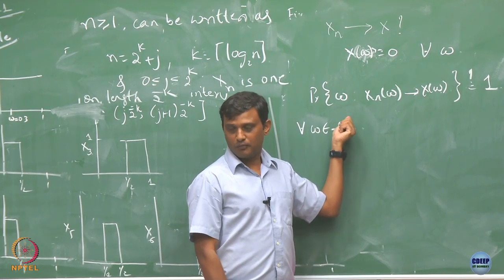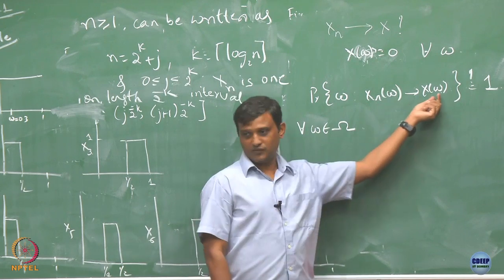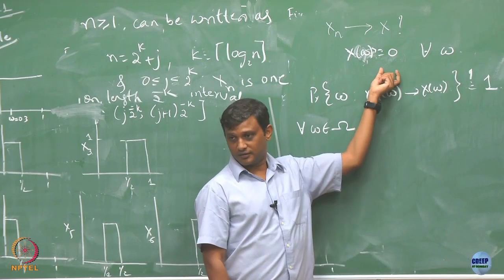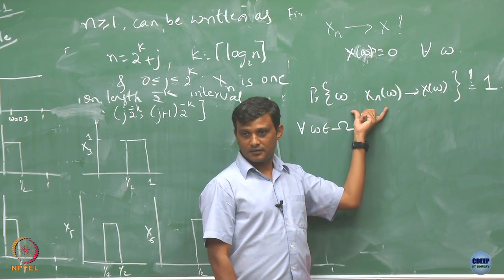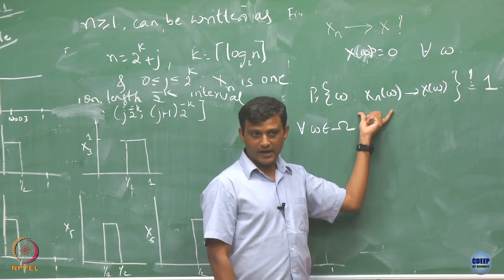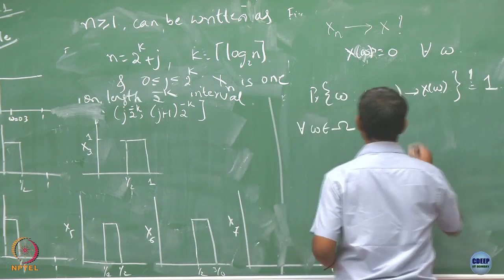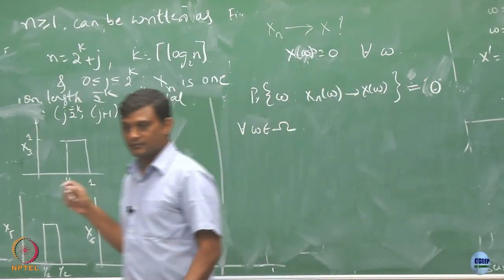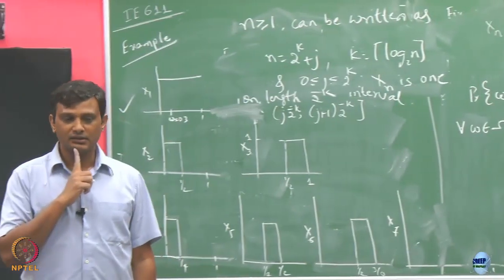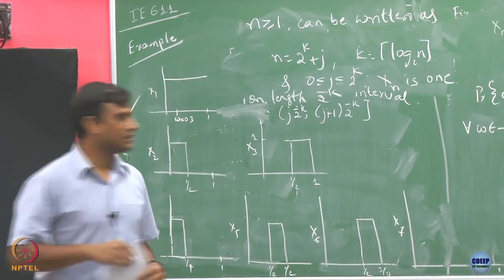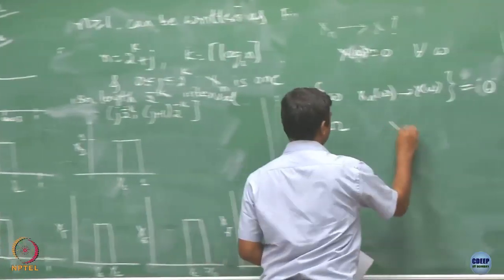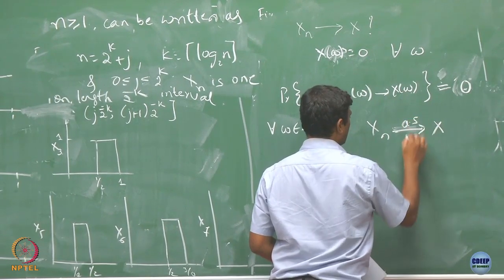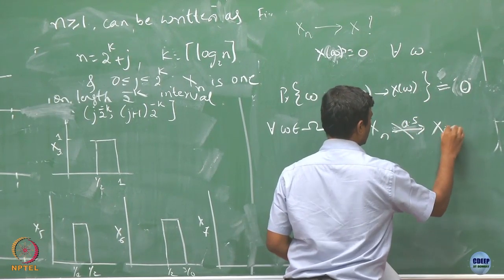There is no omega such that x_n(ω) converges to 0. So this set is a null set, and this probability is actually 0, not 1. Because of that, x_n is not converging to x almost surely, where x is identically 0.